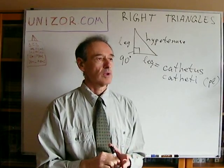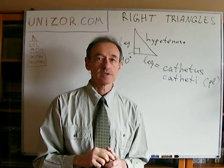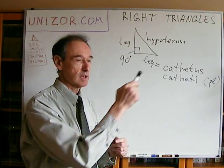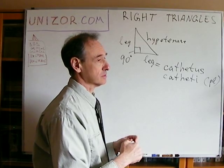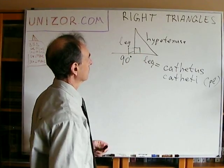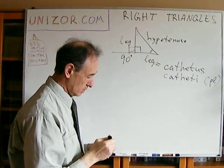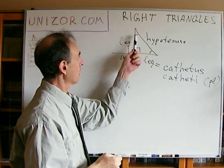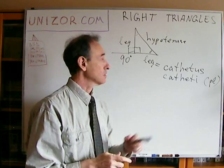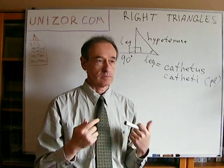You remember this little theorem, which we proved in some other lecture about the exterior angle of a triangle — that it is greater than any interior angle not supplemental with it. So the exterior angle obviously will be 90 degrees here, and since it's greater than any interior angle not supplemental with it, it means that the two other angles of the right triangle are acute — less than 90 degrees.